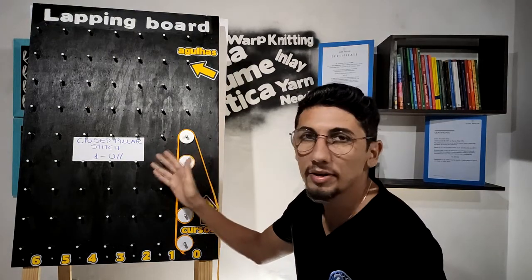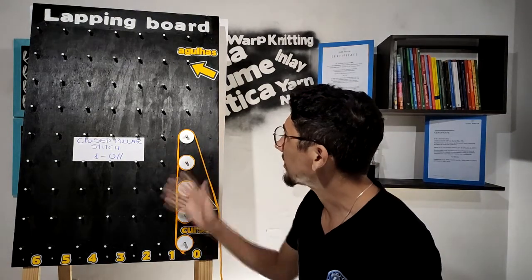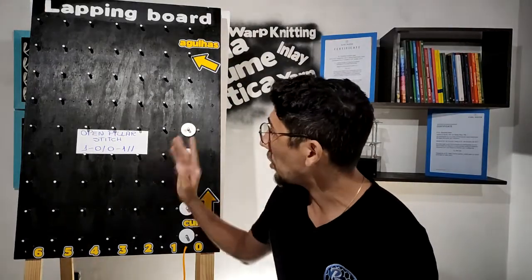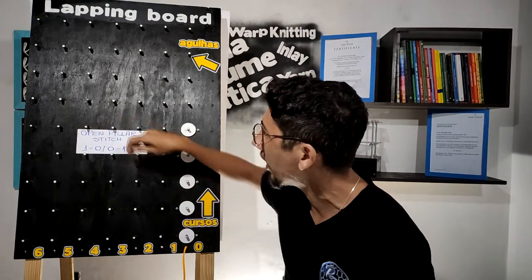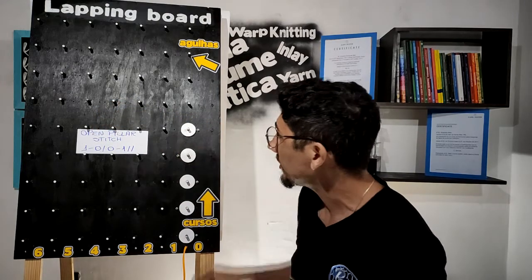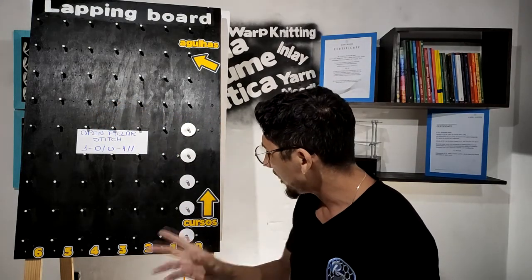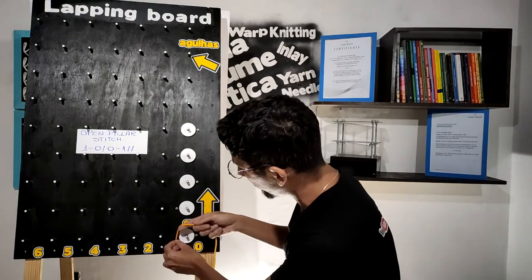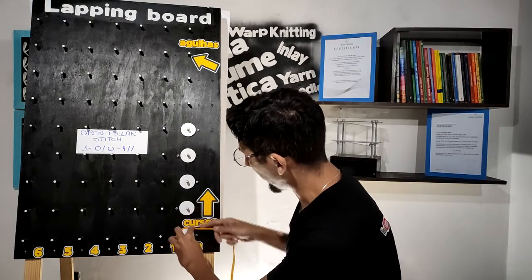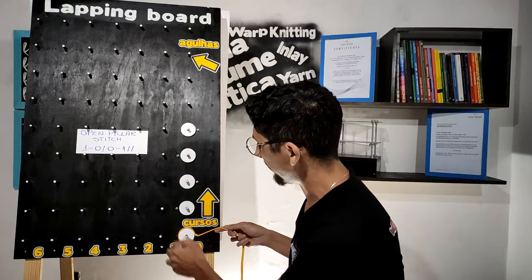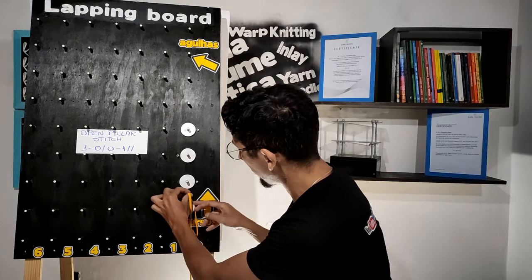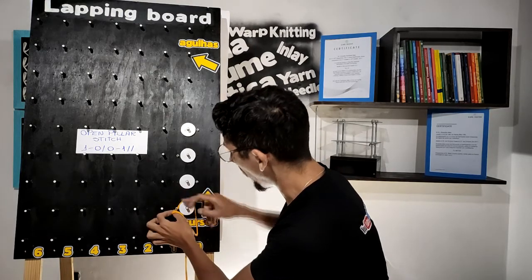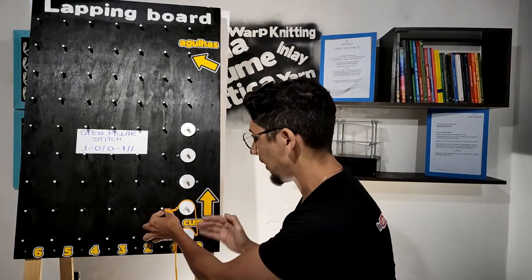Now let's represent the open pillar stitch, which has chain notation one-zero-zero-one. This is the repeat. We need first to go to space one, after that zero — this is the first stitch. The second stitch is zero-one.